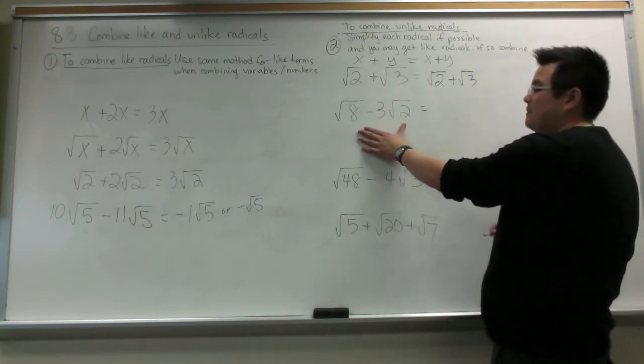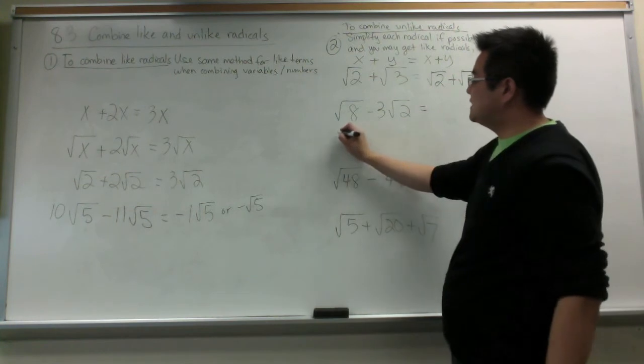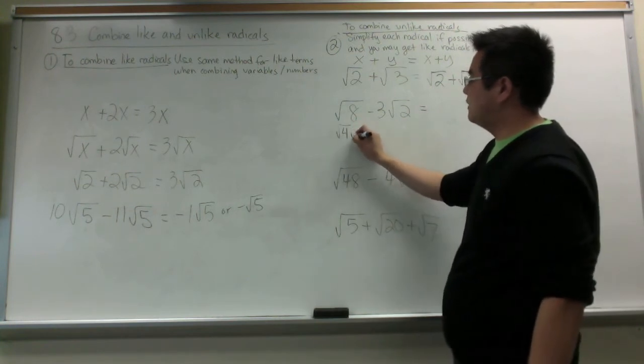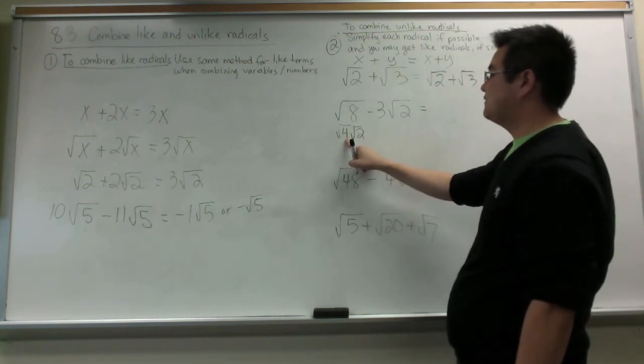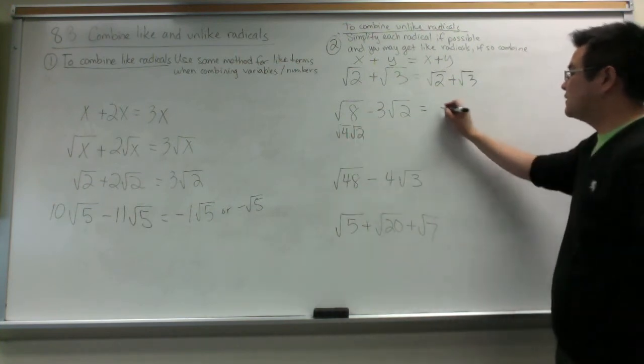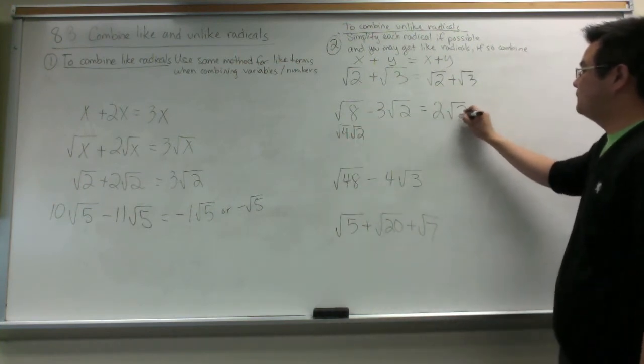If you look at this example though, root 8 minus 3 root 2, we're going to simplify root 8 into root 4 and root 2 because there's a perfect square factor. So root 8 is going to become 2 root 2.